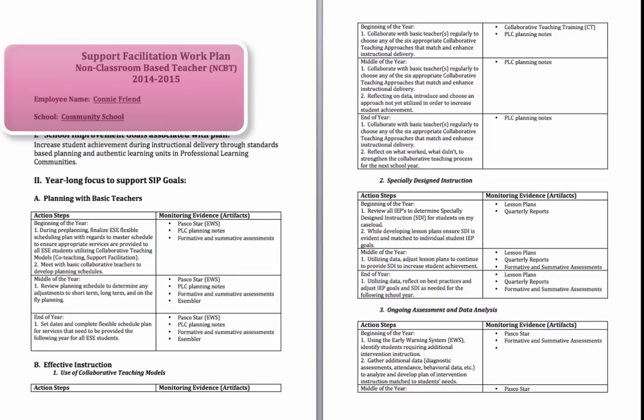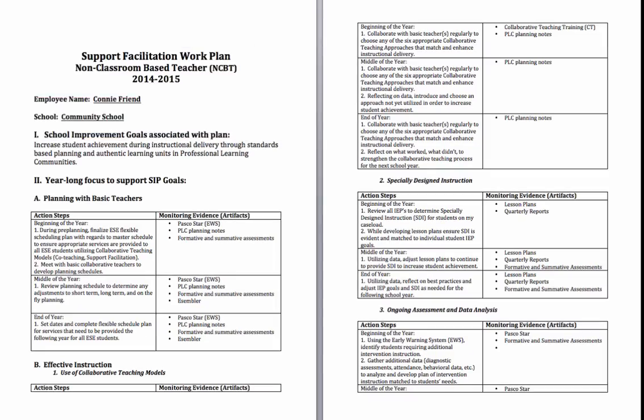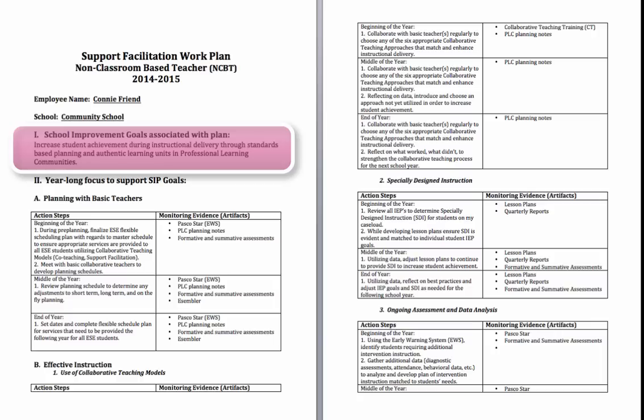The second piece the work plan must contain is the school or district goal the work plan is aligned to. This will often be a goal from the School Improvement Plan, also known as the SIP. As you can see in our example, Ms. Friend has chosen a SIP goal that focuses on increased student achievement during instructional delivery through standards-based planning in professional learning communities.